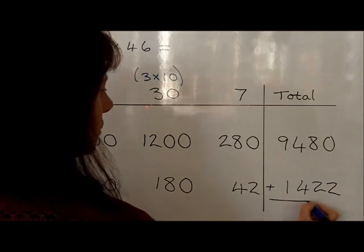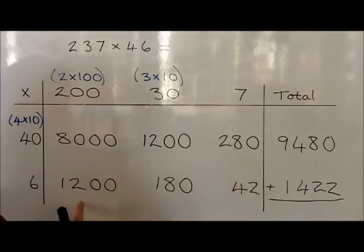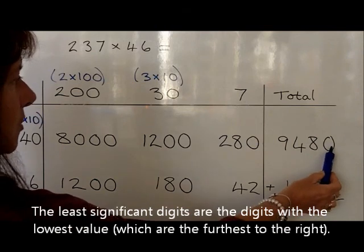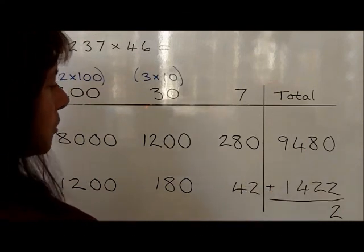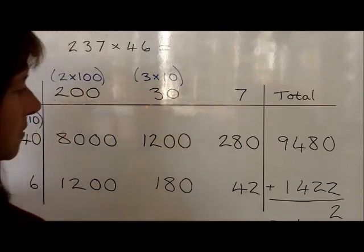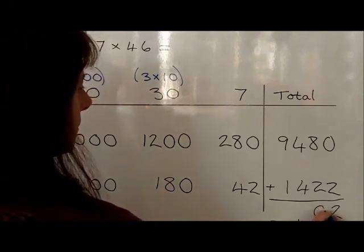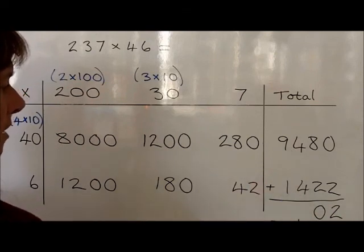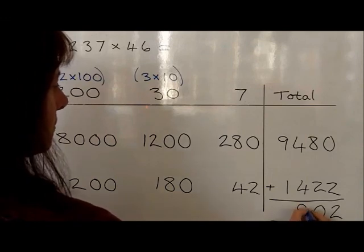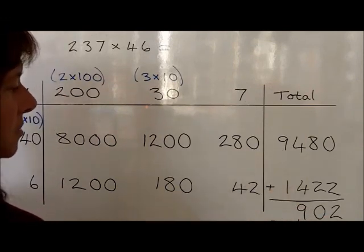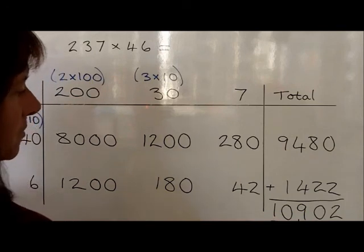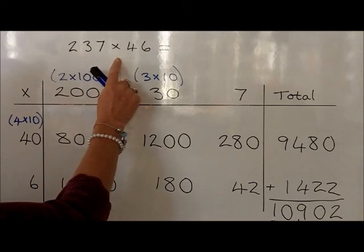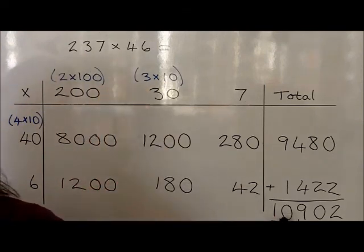We're now adding these together. If children didn't feel confident to add up the rows, they can put all 6 values in the column and then add them together. We start by adding the least significant digit: 0 plus 2 is 2. The 80 plus 20 is 100, so we carry that 100 to the hundreds column with no tens remaining. Then 400 plus 400 is 800, plus the carried 100 is 900. Then 9,000 plus 1,000 is 10,000, carrying the 1 into the ten-thousands column. So 237 times 46 is 10,902.